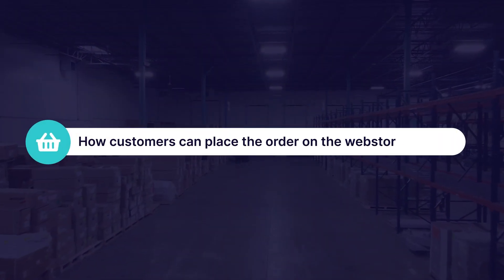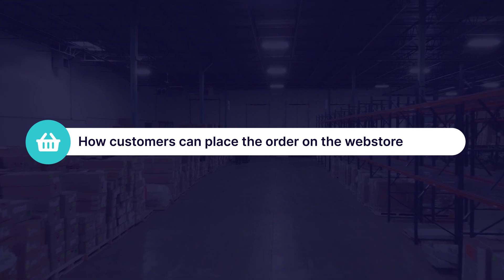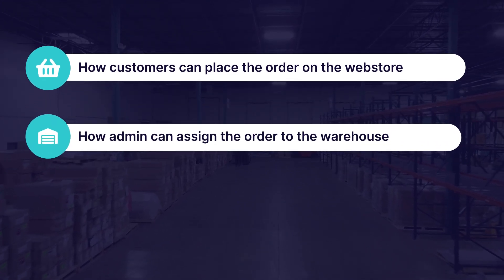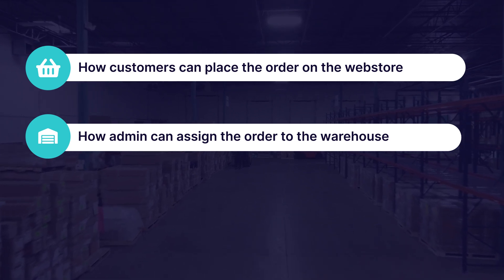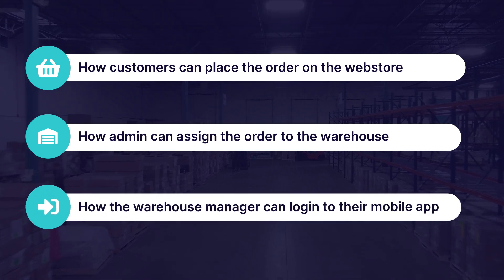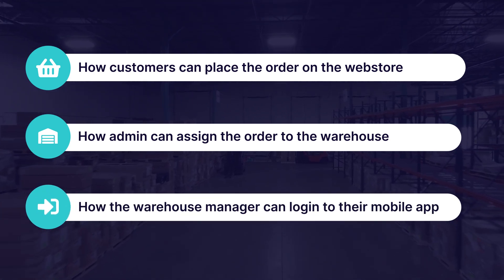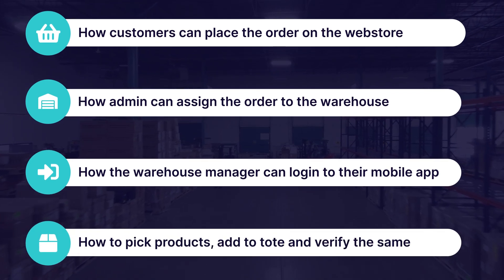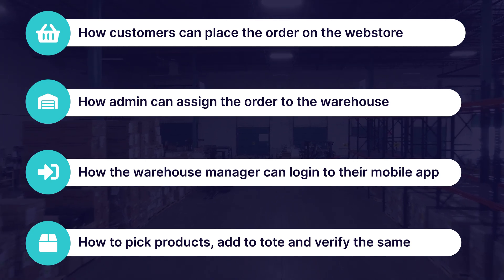In today's video, we'll first check how customers place orders on the WooCommerce web storefront. Then we'll see how the admin assigns the order to a warehouse and warehouse manager. After that, we'll look at the mobile end — how warehouse managers log in, accept orders, pick products, add them to the tote, and mark the order as shipped. We'll be demonstrating this using the Android application.